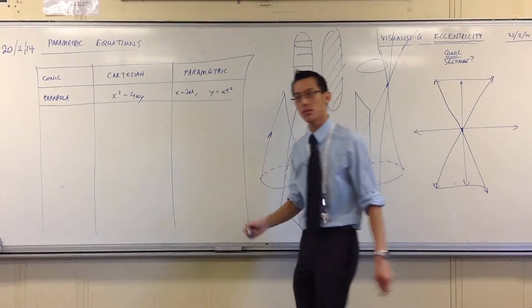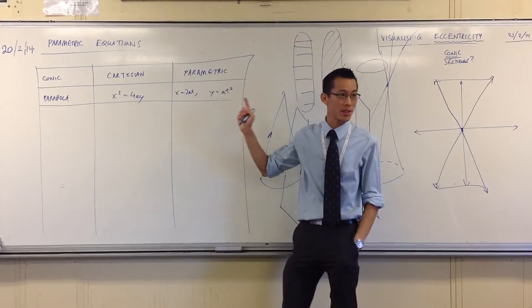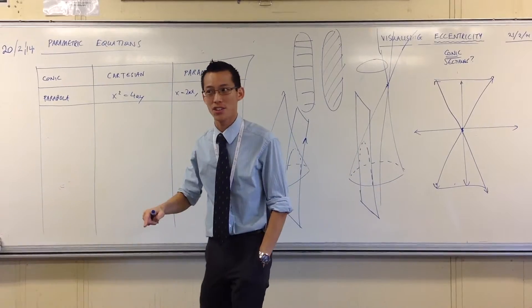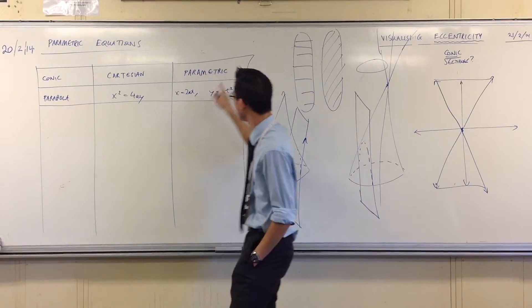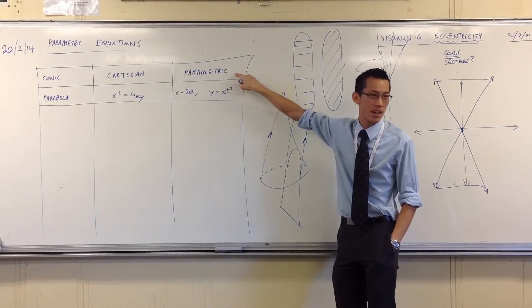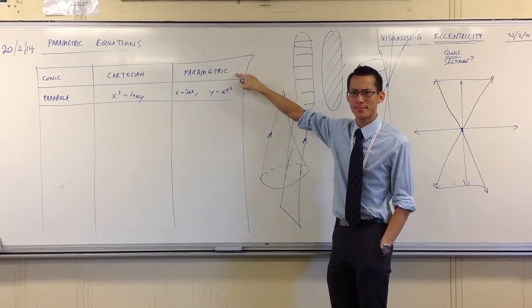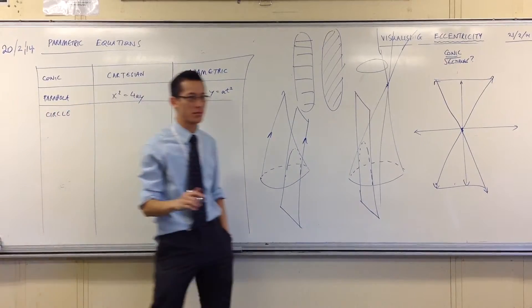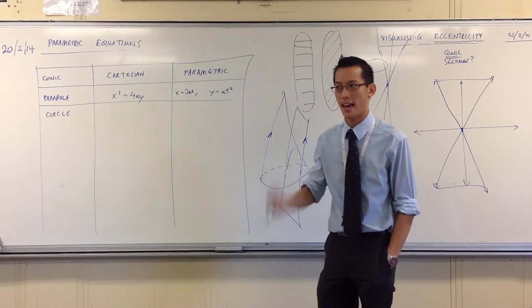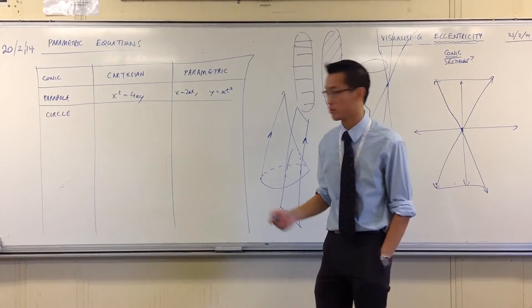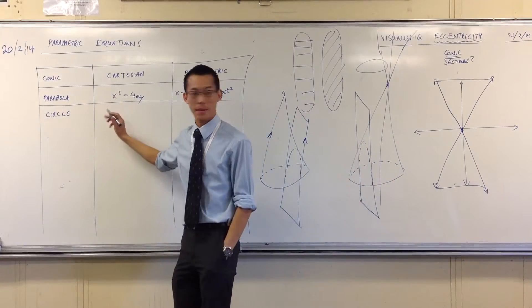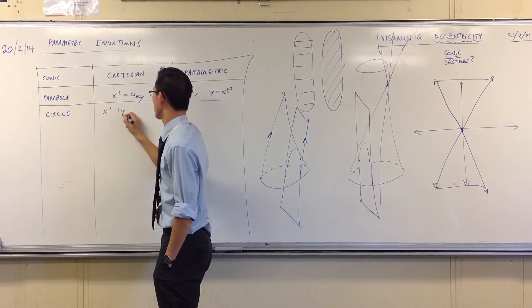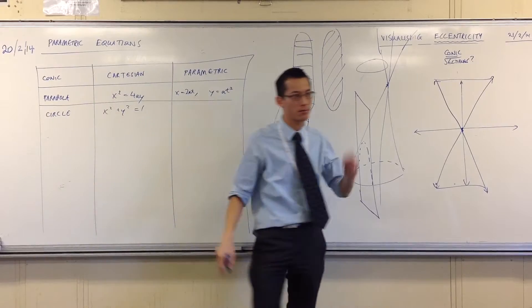Now, we also know parametric equations for another of the conic sections. You know it already, it's just that we didn't usually call it a parametric equation. Which one was it? It's a circle, isn't it? Now, we didn't usually call it a parametric equation. We usually called it something else. It had to do with angles. We'll get to it in a second. Let's just think about a basic one. Let's do the unit circle. And then we'll generalize in the next row.